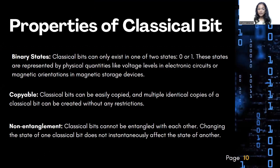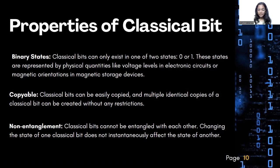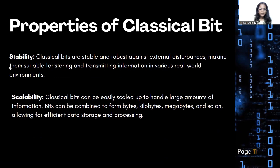Properties of classical bit. Binary states: classical bits can only exist in one of two states — zero or one — represented by physical quantities like voltage levels in electronic circuits or magnetic orientations in magnetic storage devices. Copyable: classical bits can be easily copied, and multiple identical copies can be created without any restrictions. Non-entanglement: classical bits cannot be entangled with each other; changing the state of one classical bit does not affect another. Stability: classical bits are stable and robust against external disturbances, making them suitable for storing and transmitting information in various real-world environments.